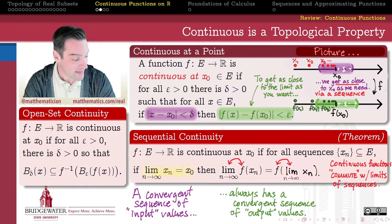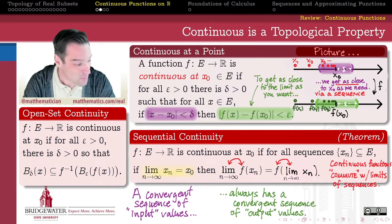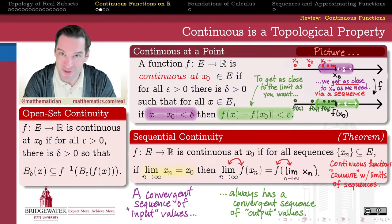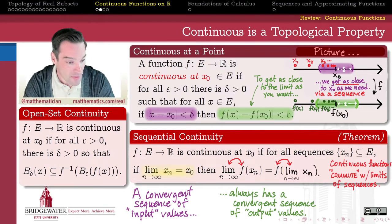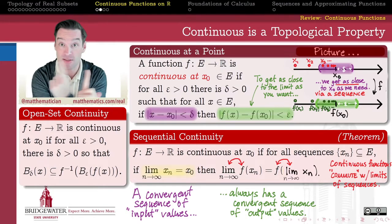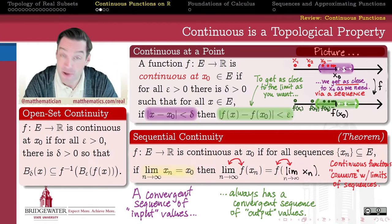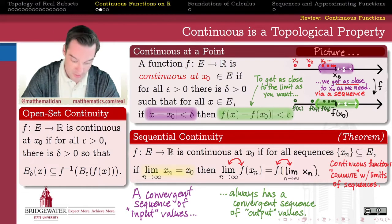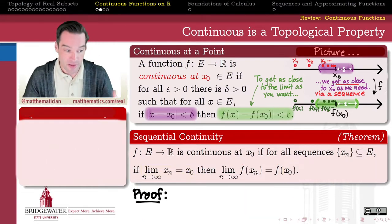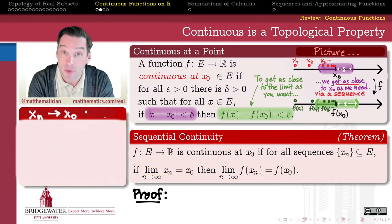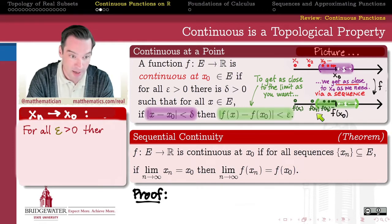Whether or not a limit can trade places with something is one of the biggest questions in all of analysis. Here we're seeing an example of what it means for a function to be able to trade places with a limit, and continuity is what's necessary in order for a function to trade places with a limit.